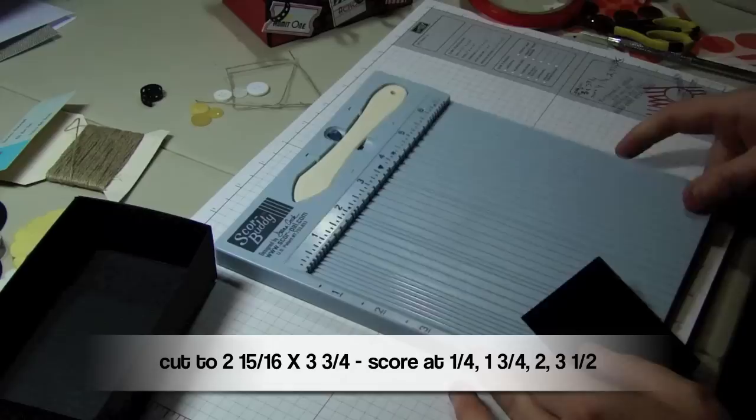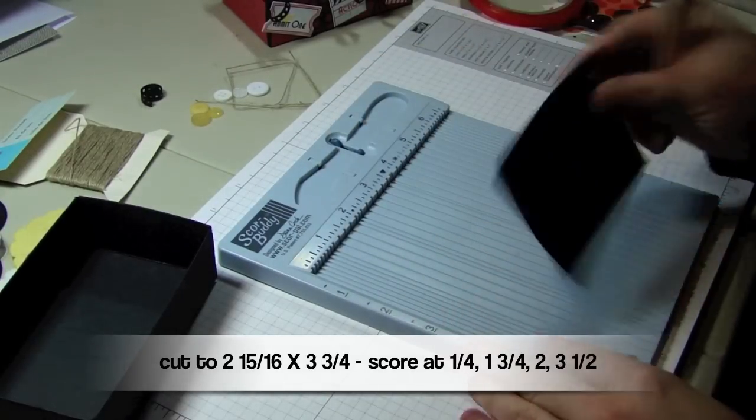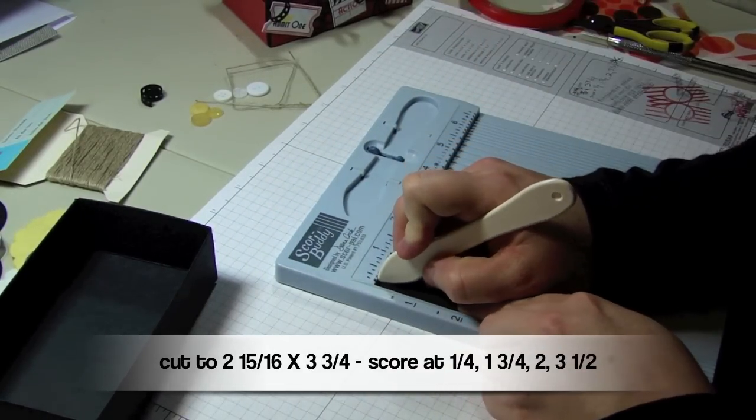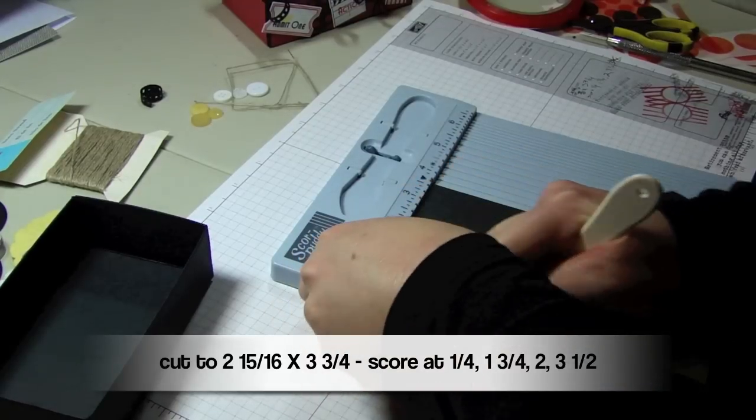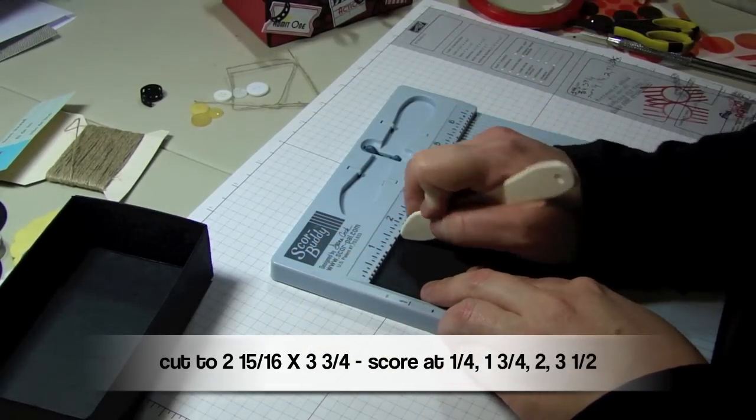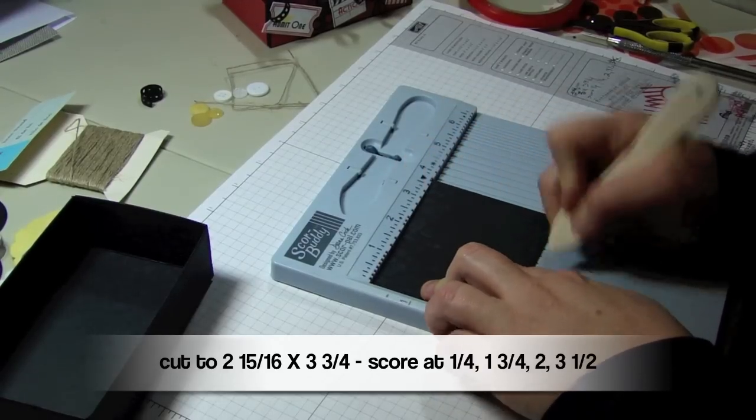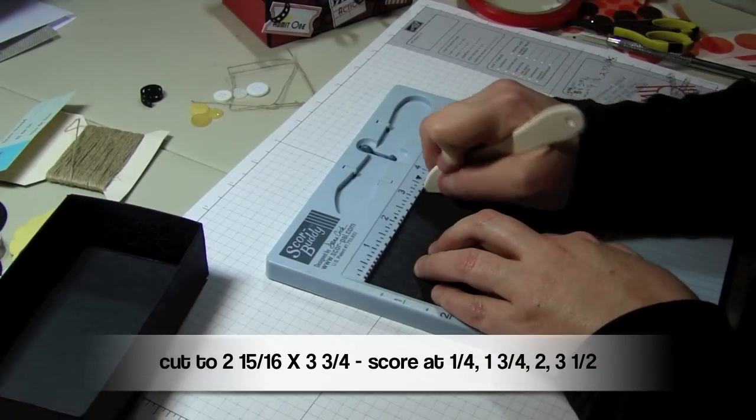Now we're going to work on the side bumper for inside the box. I like it for a more realistic look. You're going to cut your paper to 2 and 15 sixteenths by 3 and 3 quarters and then score at 1 quarter, 1 and 3 quarters, 2 and 3 and a half, which I'm doing right now.